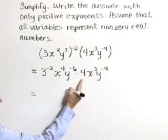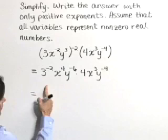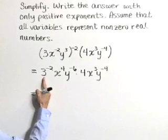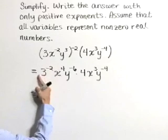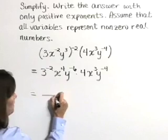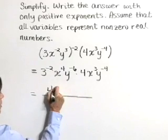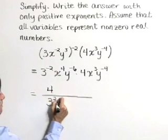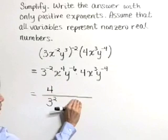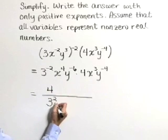As a next step, I'm going to bring this 4 coefficient out to the front. At the same time, move this 3 to the negative 2 down into the denominator where it becomes 3 to the positive 2. When we cross that fraction bar, we change the sign of the exponent.